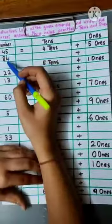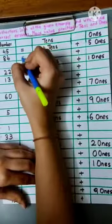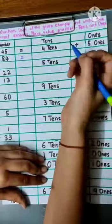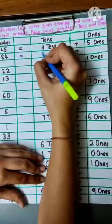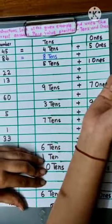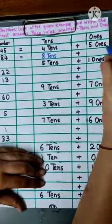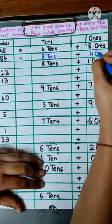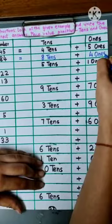There is number 84. That means 8 tens and how many ones? 4 ones. Yes, correct.